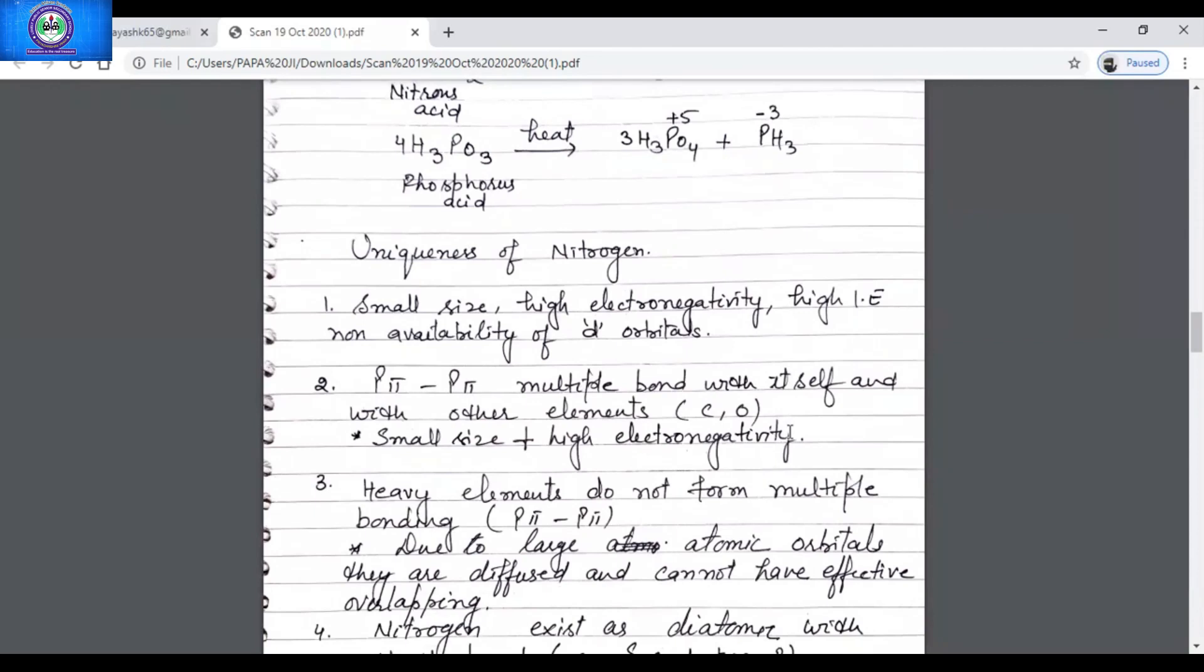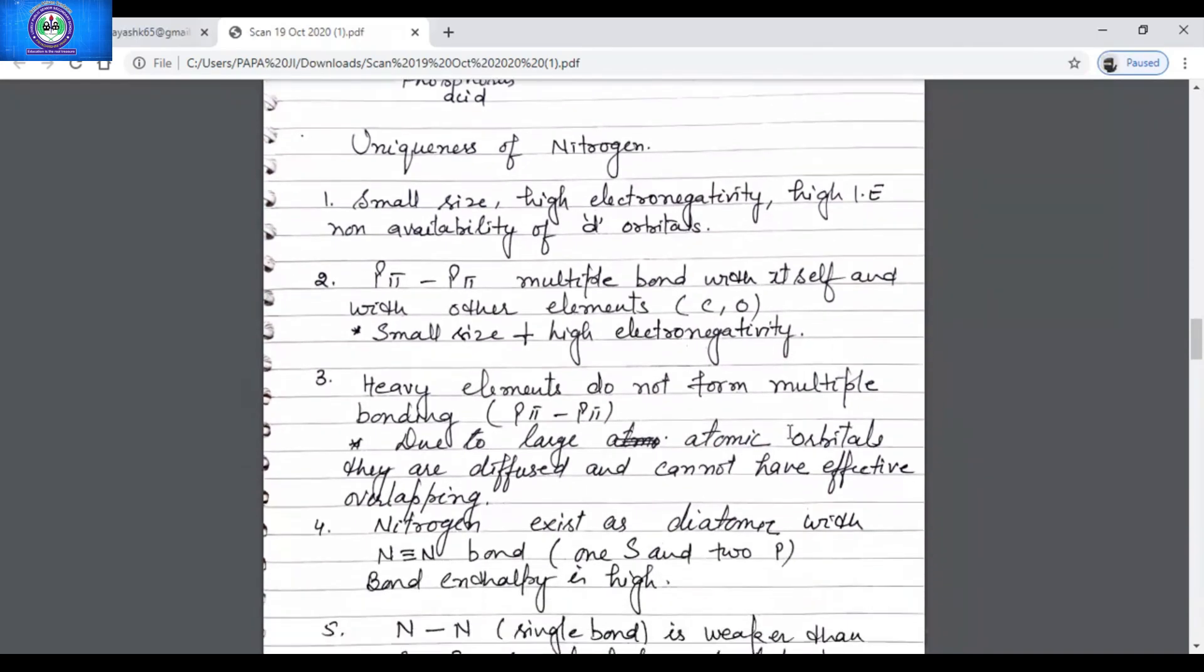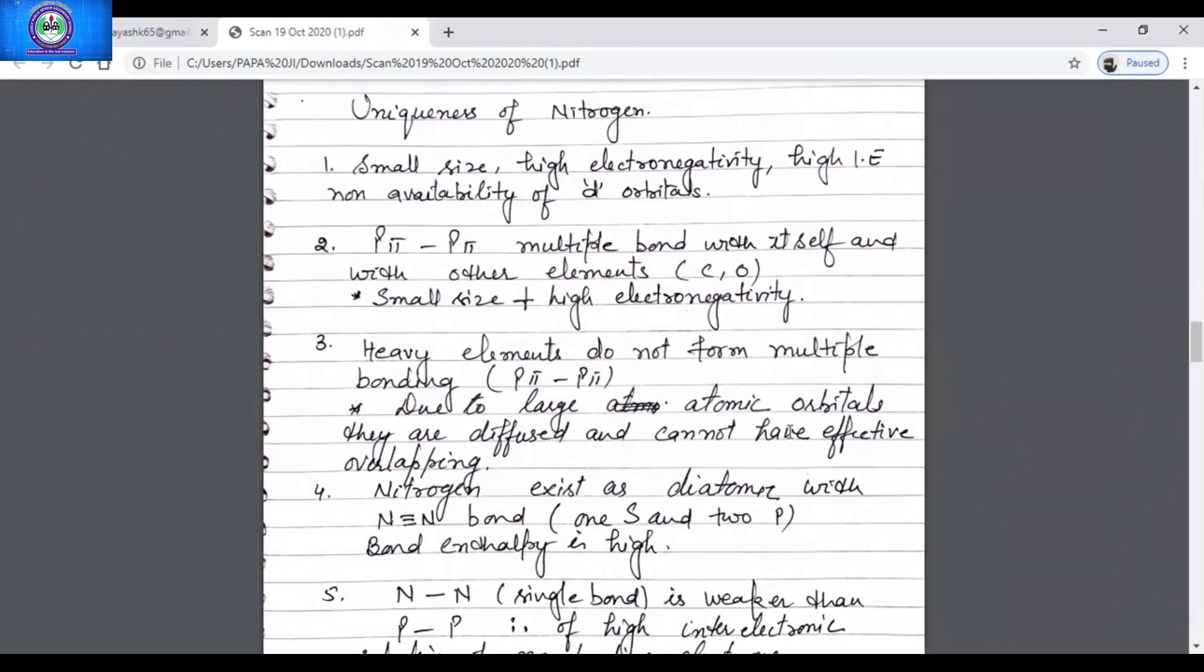Now what are the properties of nitrogen which make nitrogen entirely different from rest of the members? Very important question. It's due to small size, high electronegativity, high ionization enthalpy, and due to the non-availability of the d orbital. P pi-P pi multiple bonding with itself as well as other elements. It shows with carbon and oxygen. Small size, high electronegativity. Heavy elements do not form multiple bonds, that is P pi-P pi. Why? It's due to the large atomic orbitals.